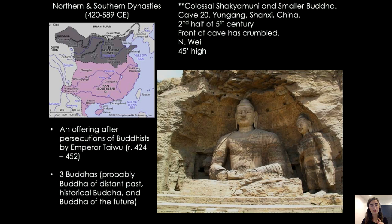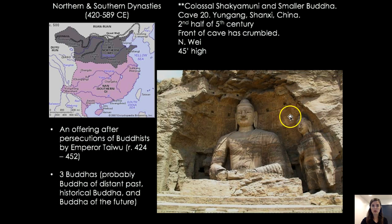In addition to these smaller objects, we have colossal rock-cut images similar to the Bamiyan Buddhas, similar to the caves of Ajanta — the idea of creating large Buddhist structures carved into the living rock. In this particular case we're seeing a large historical Buddha, the Shakyamuni, with a smaller Buddha to the side and another Buddha on the other side. Most likely these three Buddhas constitute the Buddha of the distant past, the historical Buddha, and the Buddha of the future — a tripartite representation. There would have been a cave wall covering them, but over time the stone has eroded and now we can see these images fully.